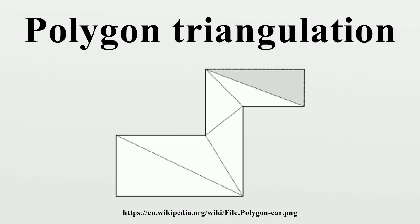A monotone polygon can be triangulated in linear time with either the algorithm of A. Fournier and D.Y. Montuno, or the algorithm of Godfrey-Tussain.